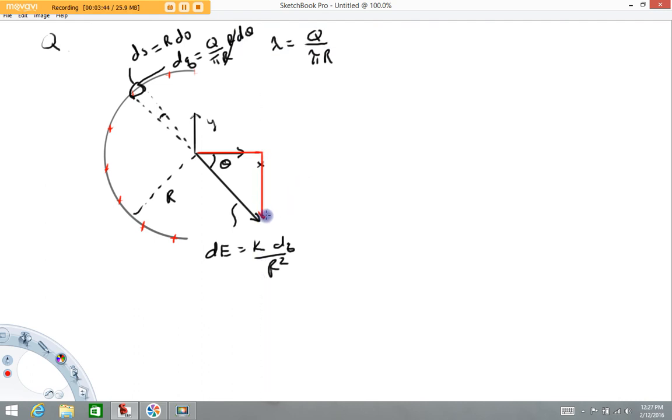The components themselves have directions. In this problem, it turns out we don't really need both of these. By observation, the net field in the y direction is going to be zero due to symmetry. We only need to worry about the x component. The x component is adjacent to angle theta, so it has magnitude DE cosine theta. This is what we need to be adding up.